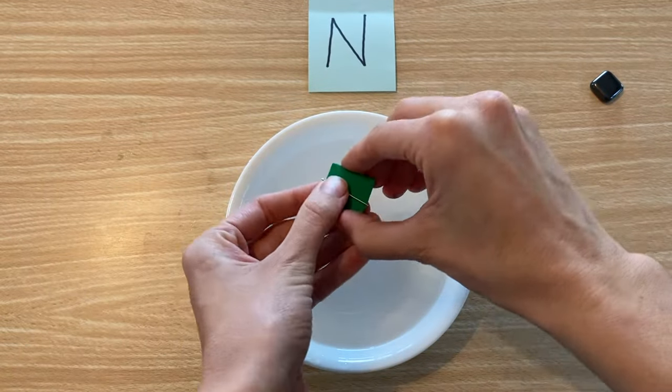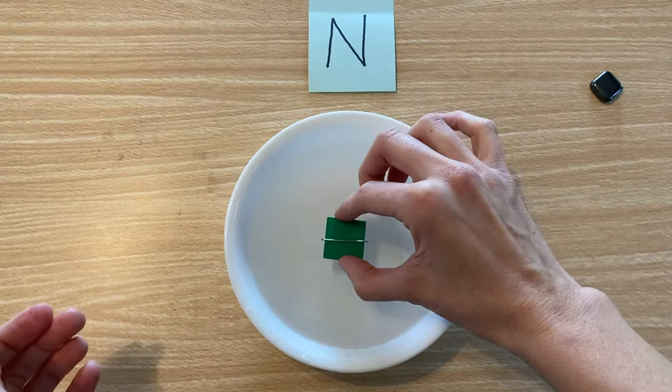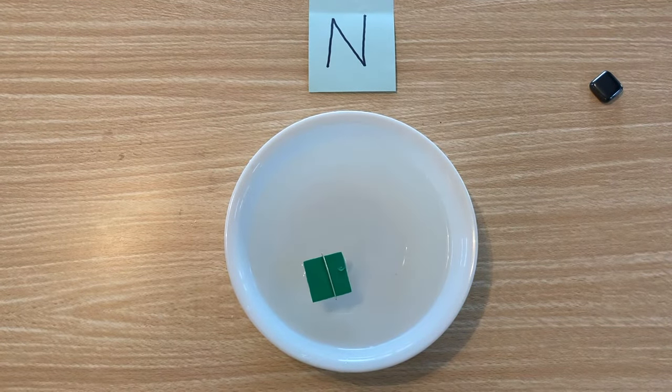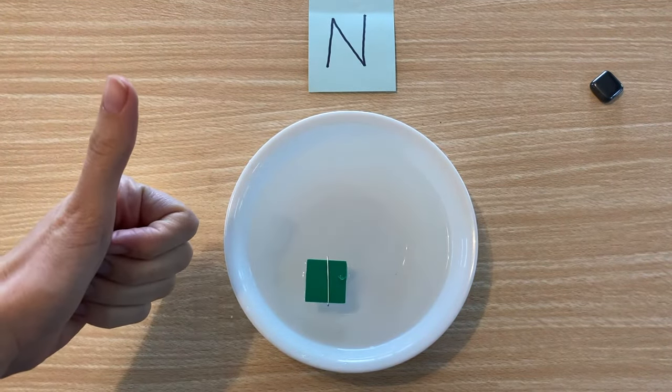Place the needle onto a piece of foam or something that floats and place it into a bowl of water. It will spin around a little and then eventually align itself with north just like a real compass.